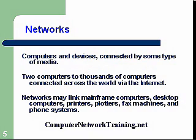Networks are computers and devices that are connected by some type of media. Normally we use a copper cable — a Cat 5 cable or Cat 6 cable. Wireless is very popular now, though wireless is not as secure as a cable. We're also going to talk about fiber optics as another type of media. Two computers up to thousands of computers can be connected across a very large network, and an example of that is the internet.